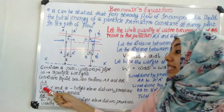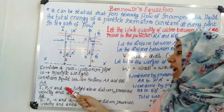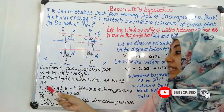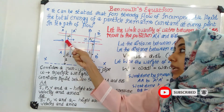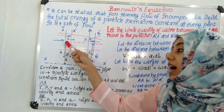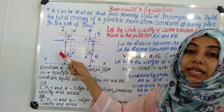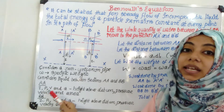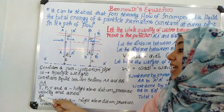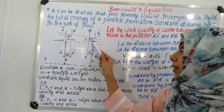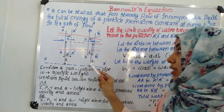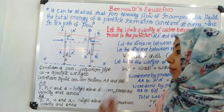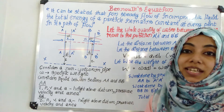At section AA, Z is the height above datum, P is the pressure, V is the velocity, and A is the area of cross section. Z is the height from the datum line to the central line. P is the pressure at section AA. V is the velocity, and A is the area of cross section at AA. For section BB, the height above datum, pressure, and area of cross section are represented as Z1, P1, and A1 respectively.